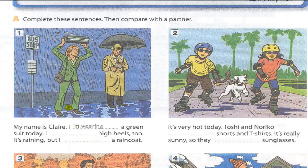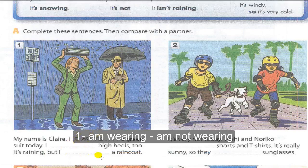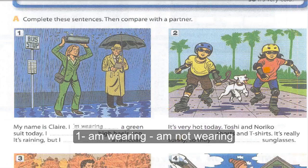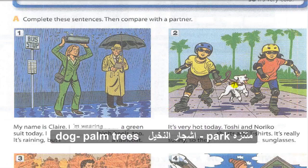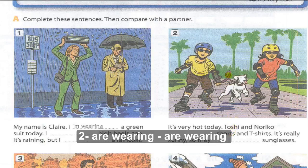Is Claire wearing a coat? No, she's not. Again, the answers: I'm wearing, I'm wearing, I'm not wearing. Look at the next picture — dog, trees, palm trees. Where are they? They are in the park. It's very hot today. She and her friend are wearing shorts and T-shirts, and they are wearing sunglasses because it's very sunny.